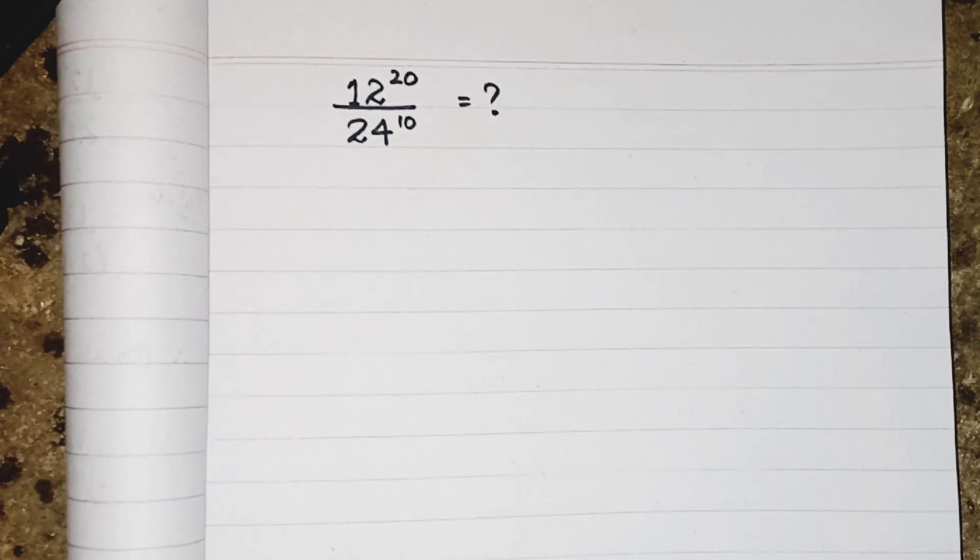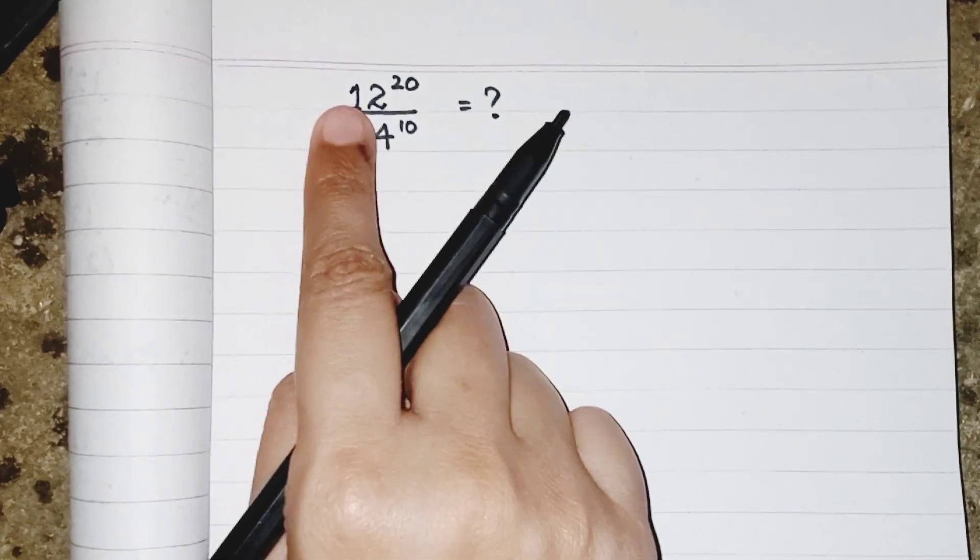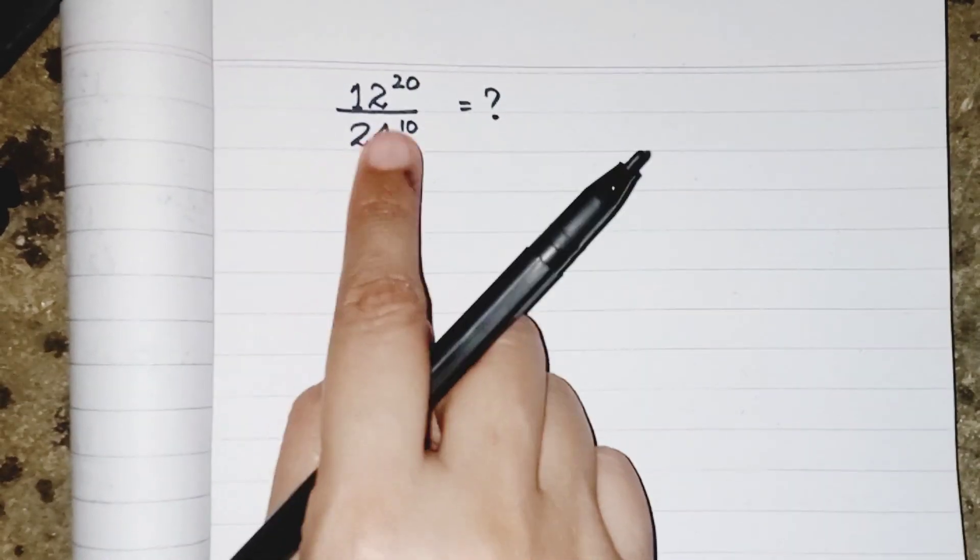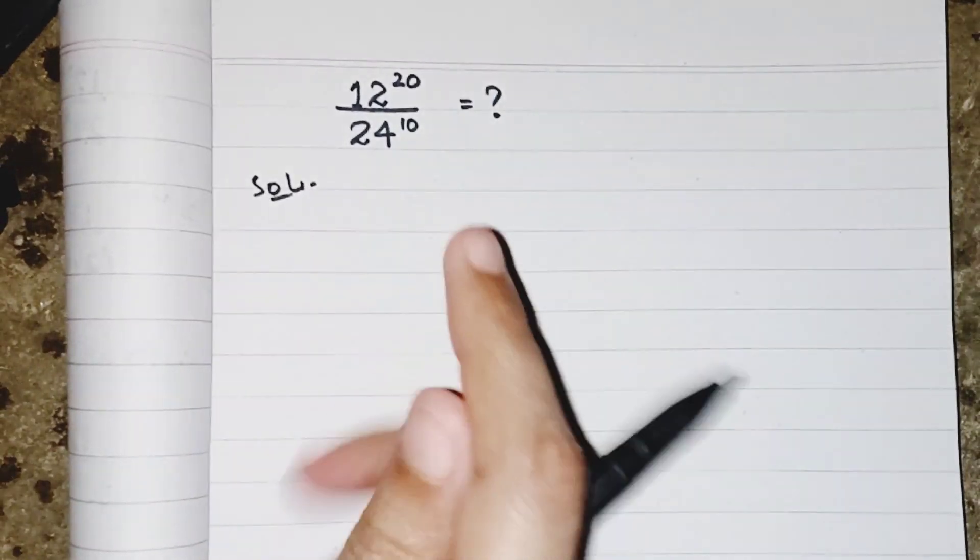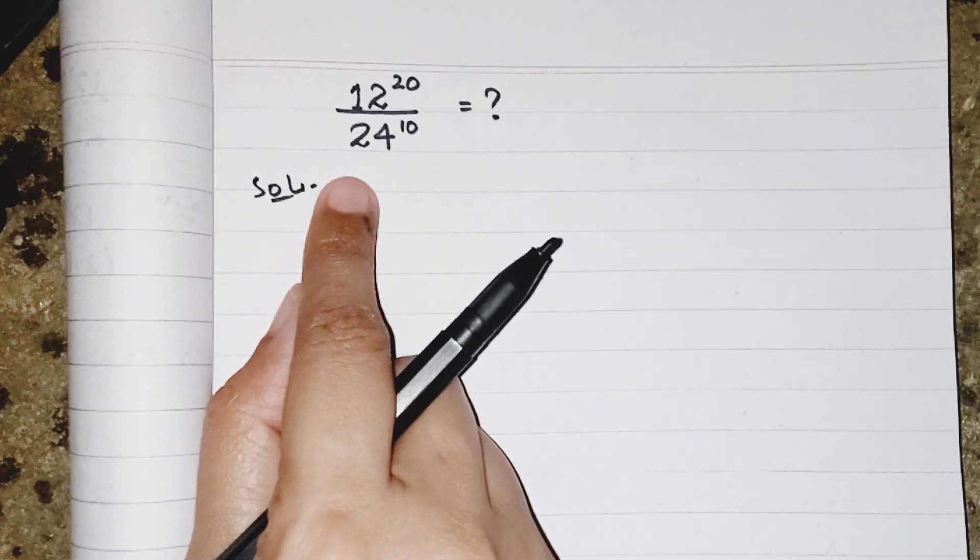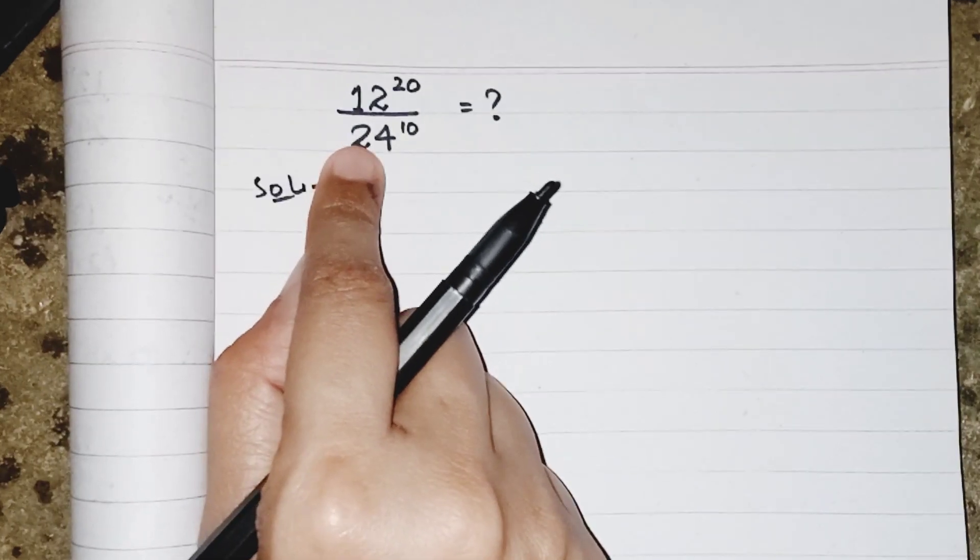Hello everyone, today we learn how to solve an exponential question. My question is 12 power 20 over 24 power 10. Both numerator and denominator are different numbers, but we know that both are multiples of 2.